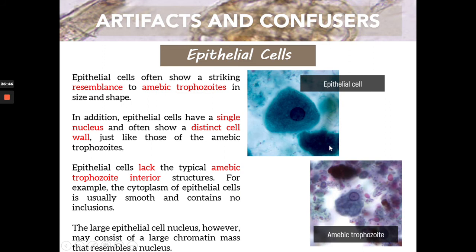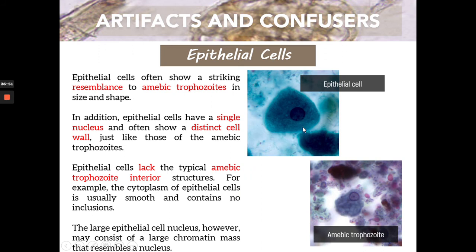Comparing epithelial cells to amoebic trophozoites: the cytoplasm of epithelial cells is quite bare and the outer periphery shape is defined, whereas for amoebic trophozoites it is irregular. In the trophozoite, you can see the karyosome — a smaller circle at the center — along with the nucleus. Epithelial cells are normal constituents and usually do not indicate any infection.